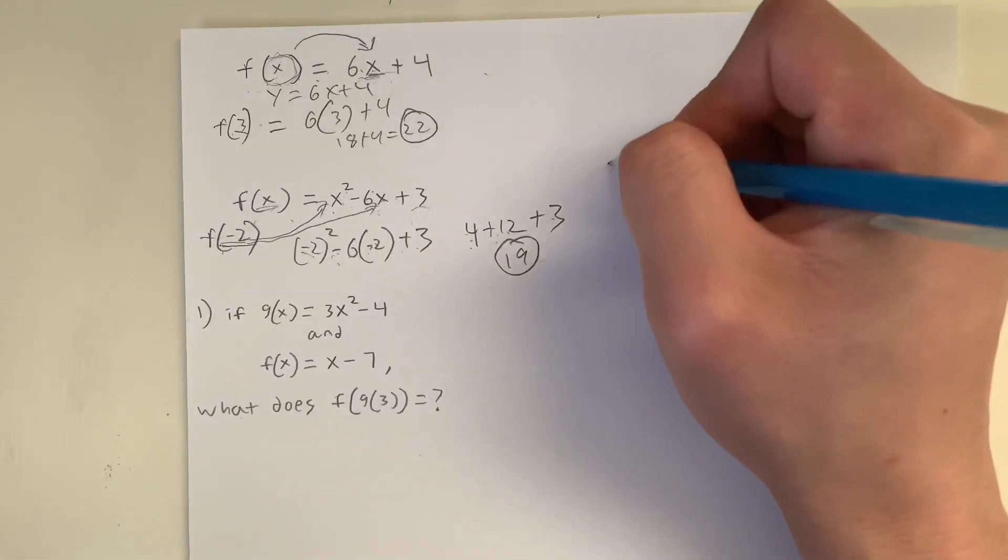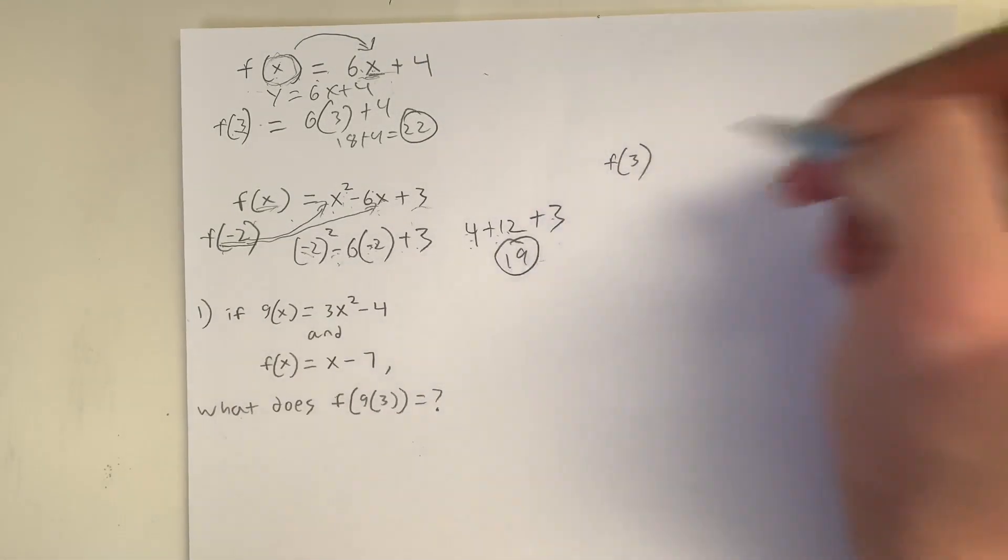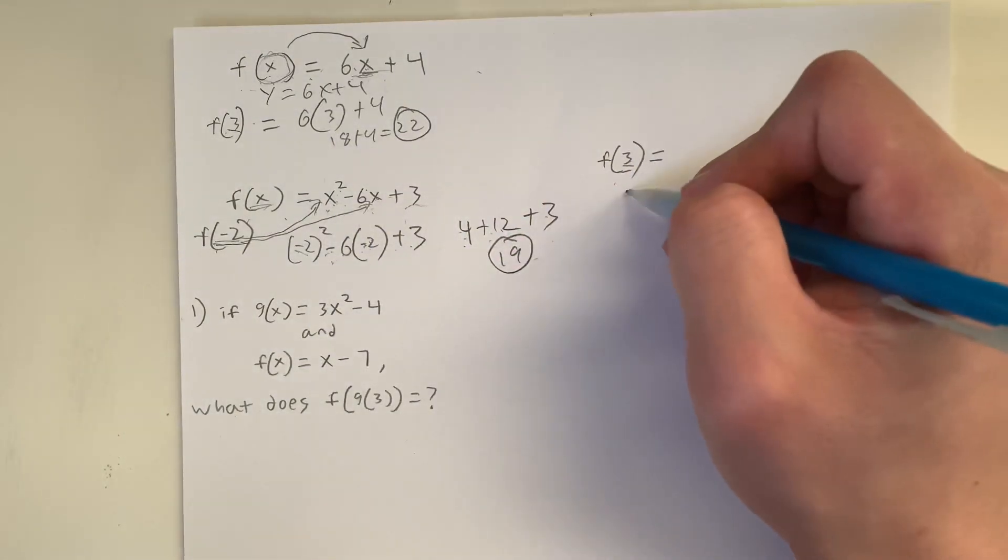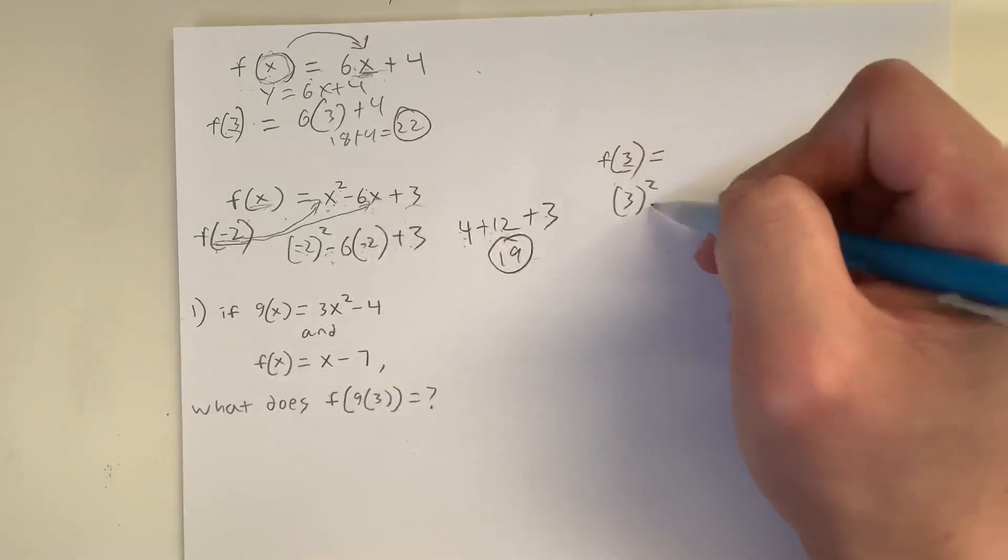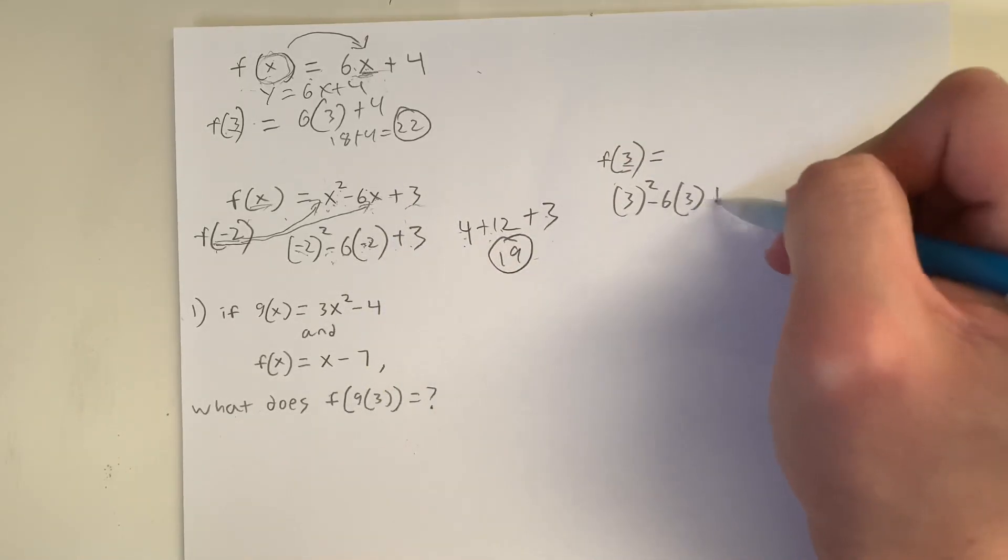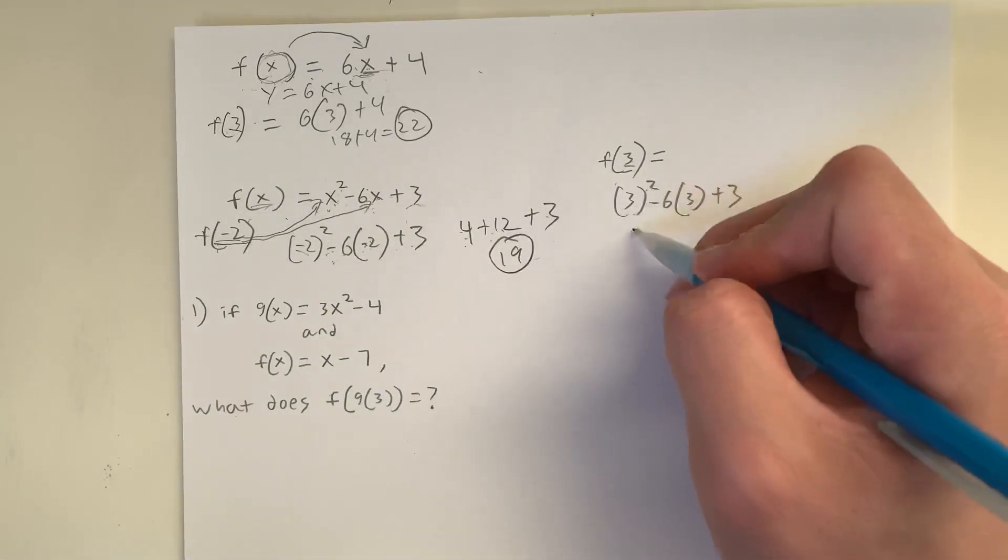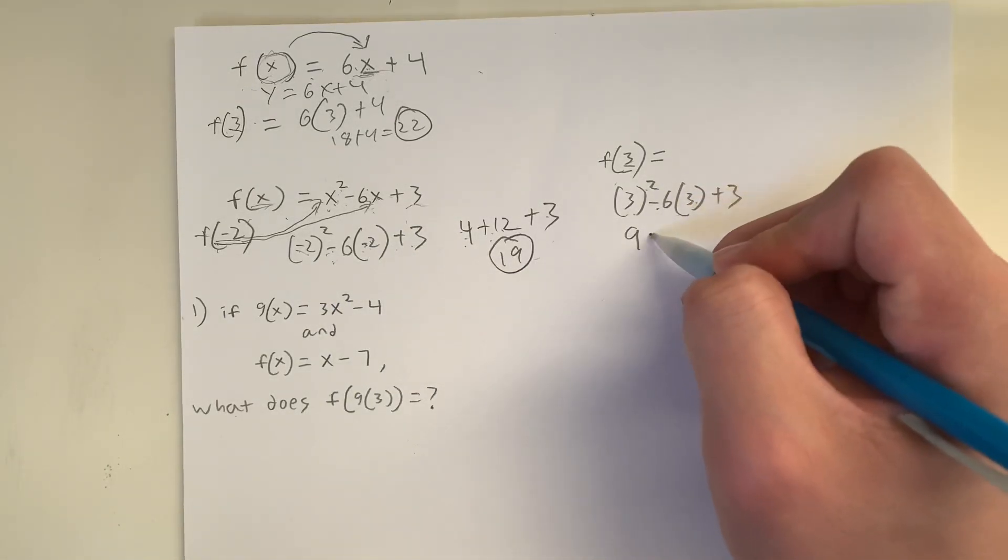So what if the question we're asking for f(3)? So it's kind of the same rule. All we have to do is plug in the value of 3 for the value of x. So that's equal to 3 squared minus 6 times 3 plus 3. We substitute 3 for the value of x. And as you can see, 3 squared is 9.